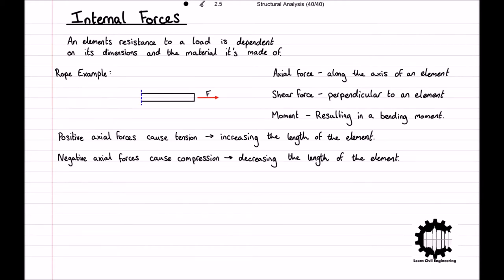Going back to our example of the rope, this could be represented by cutting the rope in half. Considering only the length of rope on the right, we have the tensile force F acting in the right direction. Analyzing the equilibrium of the section of rope, we know that the internal force at the point of the section is a tensile force with magnitude F, acting in the left direction, and now we can see that this part of the structure is in equilibrium. A general rule is that if you divide any structure into two separate parts and replace each part by the internal forces in the cut section, both parts will be in equilibrium.